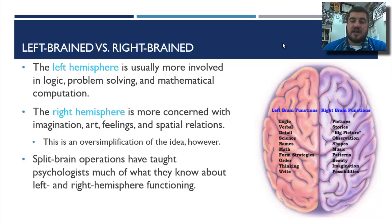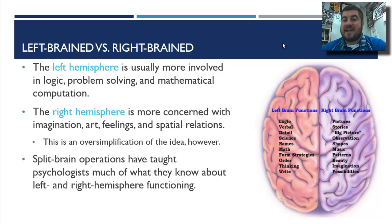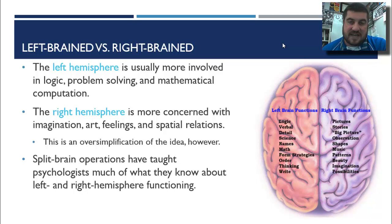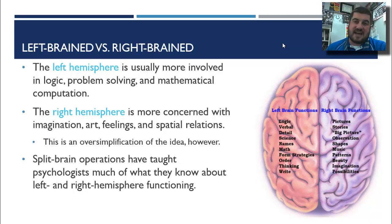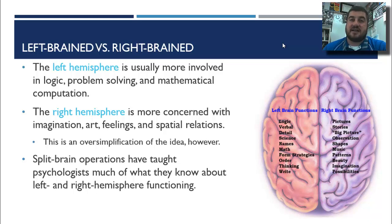Left brain versus right brain: the left brain is where logic, science, math, and higher-order thinking skills happen. The right hemisphere is more concerned with imagination, art, creativity, feelings, and spatial relations. This is an oversimplification — both parts of the brain are involved in creativity and logic, but they tend to have different specializations. Split-brain operations, where surgeons sever the corpus callosum, have taught psychologists a lot about left and right hemisphere functioning.